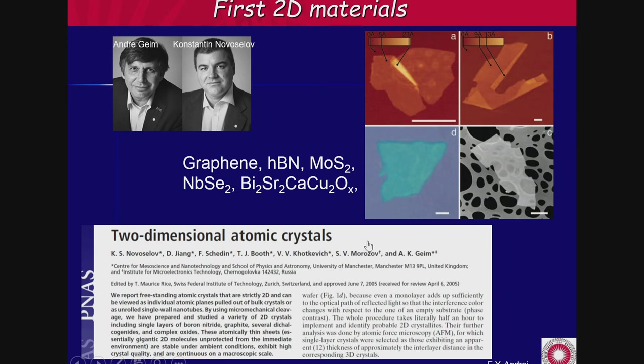So when in 2004 Geim and Novoselov from Manchester announced that they were able to isolate a two-dimensional atomic crystal, people did not believe them. In fact, they were not able to publish their work because people said you can't do that — you must be lying, you must be cheating. So they got very nervous and invited everybody in the field to come to their lab. They were able to isolate graphene, niobium diselenide, boron nitride, and about five different two-dimensional materials.